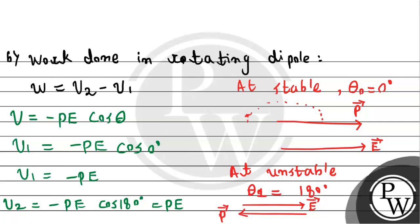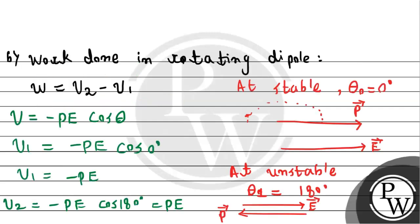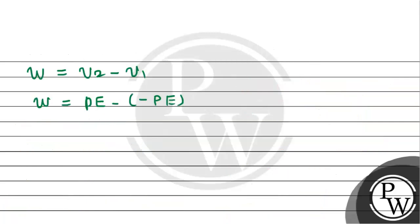Using the formula for work done, W equals U2 minus U1. So W equals pE minus minus pE, where p is dipole moment and E is electric field. Minus minus gives plus, and therefore the required work done to rotate the dipole will be 2 times pE. This is the answer for part B of this question. In this way we have completed the solution. I hope you understand. Thank you.